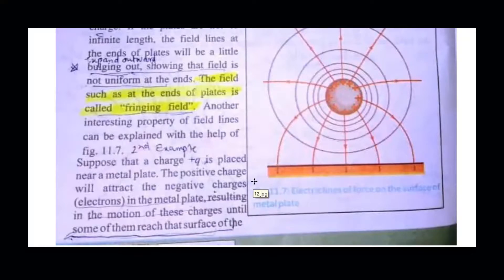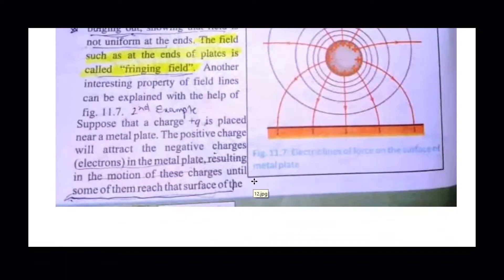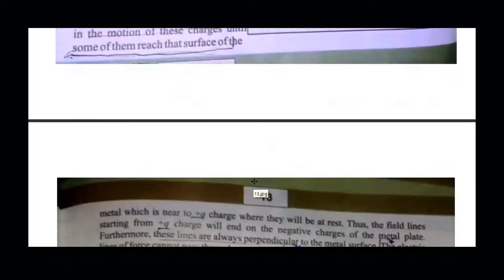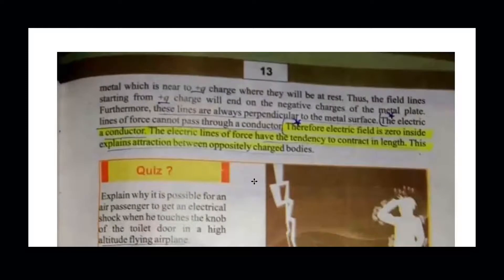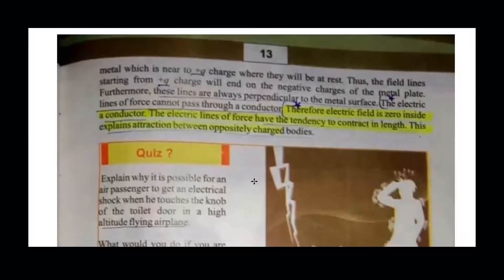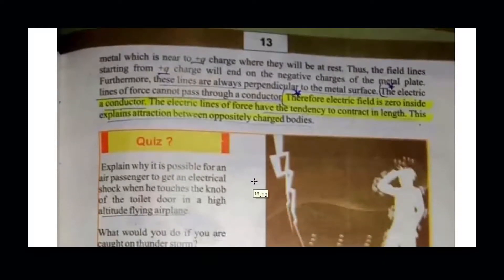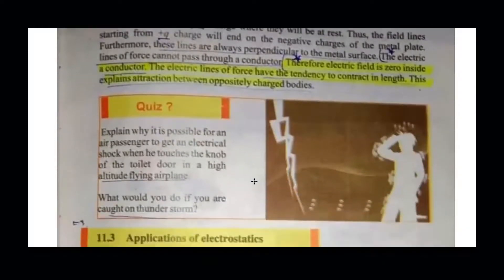This is the last example of the representation of the electric field. The topic on the next page states that the electric field inside a conductor is zero, and this is related to the attraction between charged bodies.